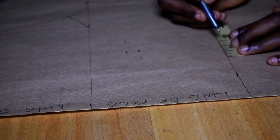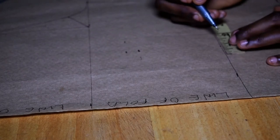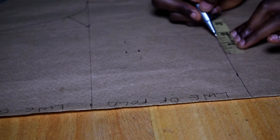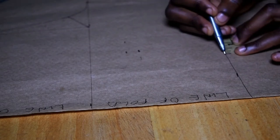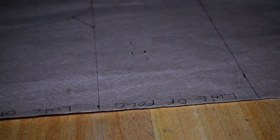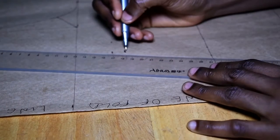For princess seam, the front bodice, the normal triangular darts is going to end at the under bust.